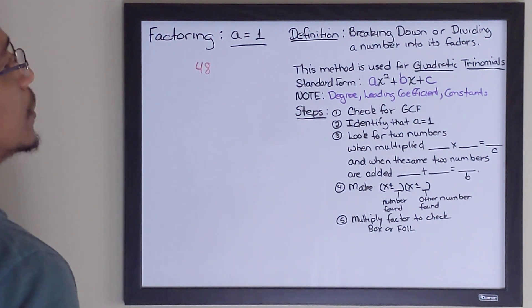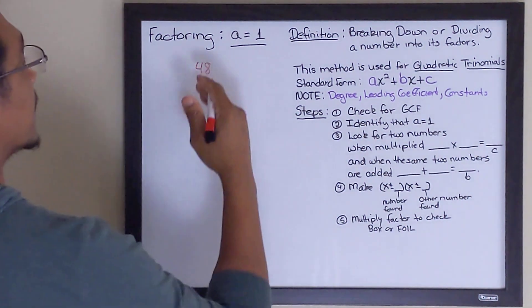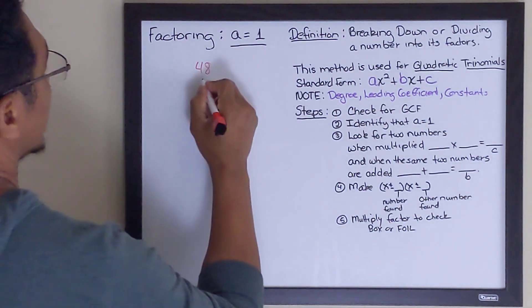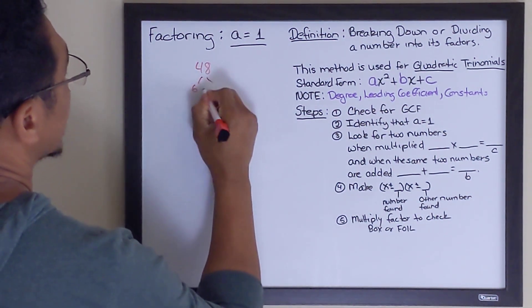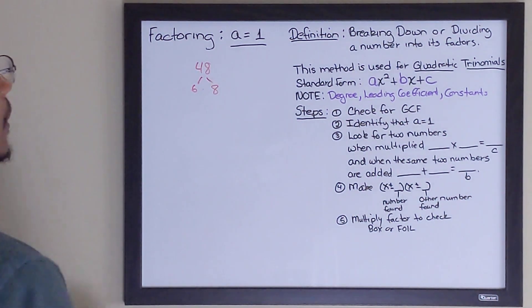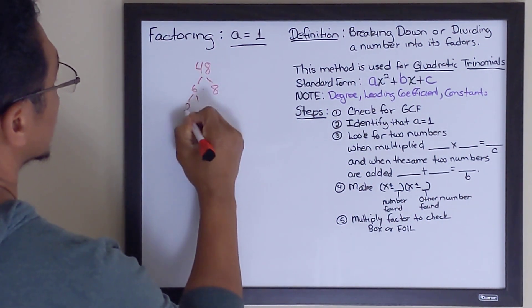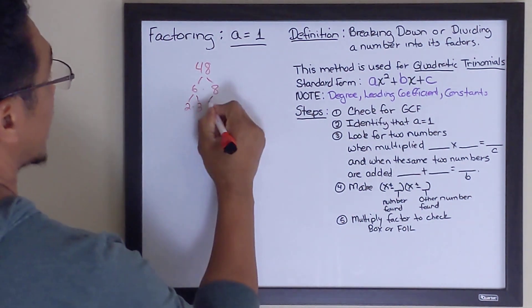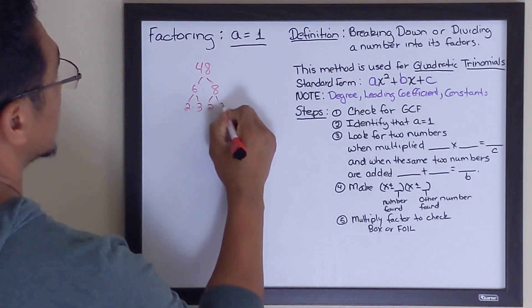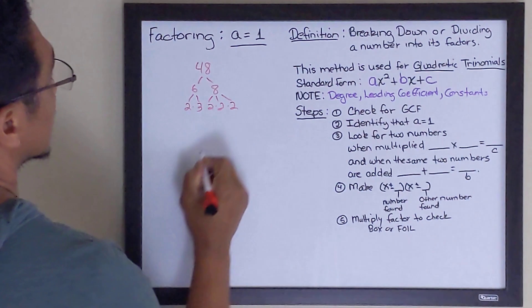You would use what's known as prime factorization to break this 48 down. And I would get 6 times 8, or some other numbers that multiply to 48. Then if I break this down some more, I'll get 2 times 3. And then if I break down the 8, it would be 2 times 2 and another 2.